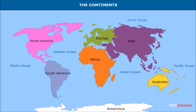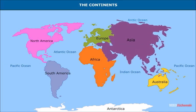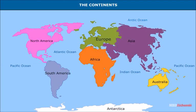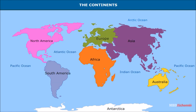The continuous land masses of the globe are known as the continents. There are seven continents. Asia is the biggest continent; it occupies about one-third of the total land of the earth. Europe lies to the west of the continent of Asia. Europe and Asia are a continuous single land mass and is known as Eurasia.